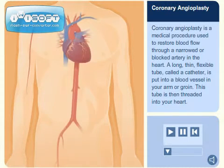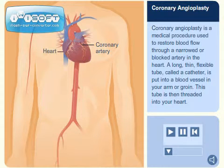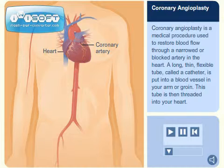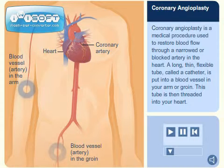Coronary angioplasty is a medical procedure used to restore blood flow through a narrowed or blocked artery in the heart. A long, thin, flexible tube, called a catheter, is put into a blood vessel in your arm or groin. This tube is then threaded into your heart.